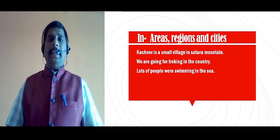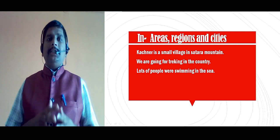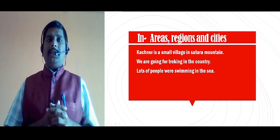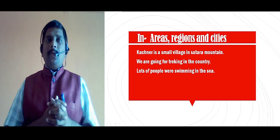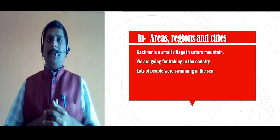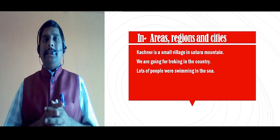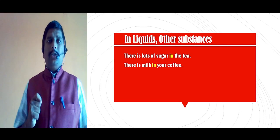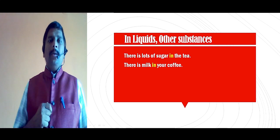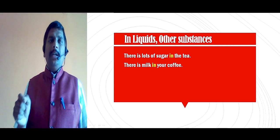'In' is used in areas, regions, and cities. For example: Kachnir is a small village in Satara mountain. We are going for trekking in the country. Lots of people were swimming in the sea. 'In' is used in liquids and other substances also. For example: there is lots of sugar in the tea. There is milk in your coffee.